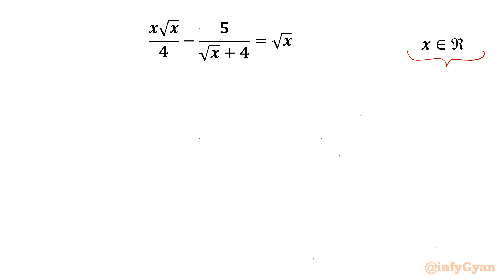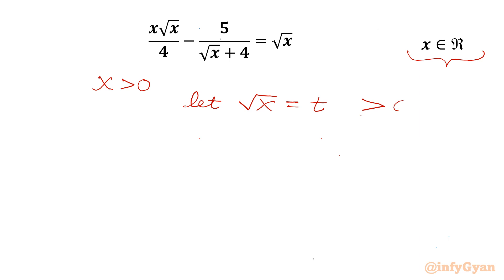So let's get started. As √x is involved, for real solutions x should be greater than 0. Now I will use a substitution. Let √x = t, which means t should always be greater than 0, so x will be equal to t².